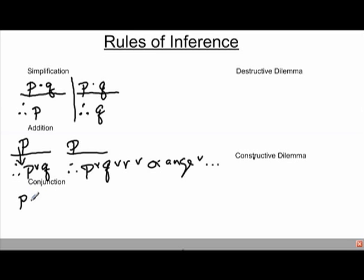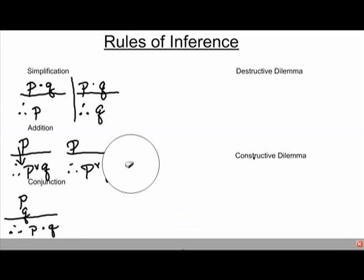The rule of conjunction states that if we have p and we have q separately, we can conclude that we have p and q together. Anytime you have various pieces in separate places — as long as they are stated to exist — we have p, we have q, we naturally conclude that we have both. You can combine them together in a single line. That's the idea of conjunction.